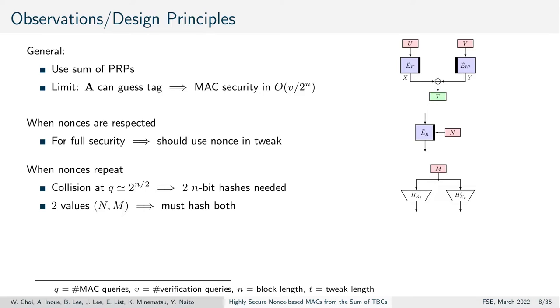Moreover, given two parameters, the nonce and the message, both of them must be input to the hash function. Finally, in many cases, the tweak size will not be larger than the block size. Since we will need two hashes to overcome the birthday bound from the collision of a single hash, we will also need two tweakable block cipher calls to process the hash and the nonce.